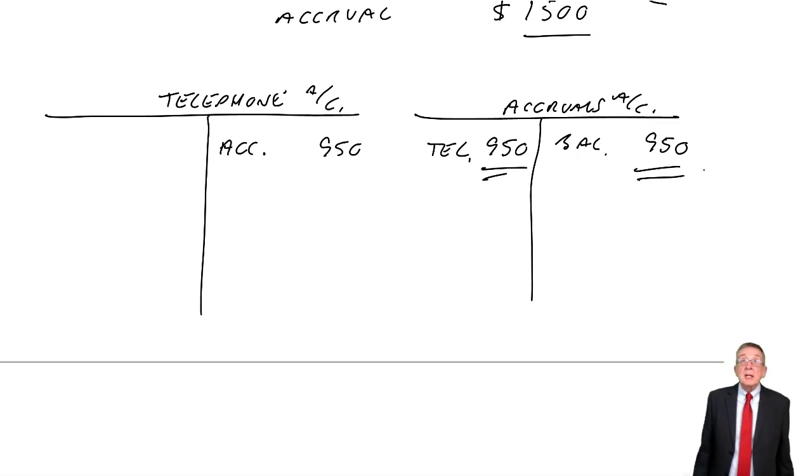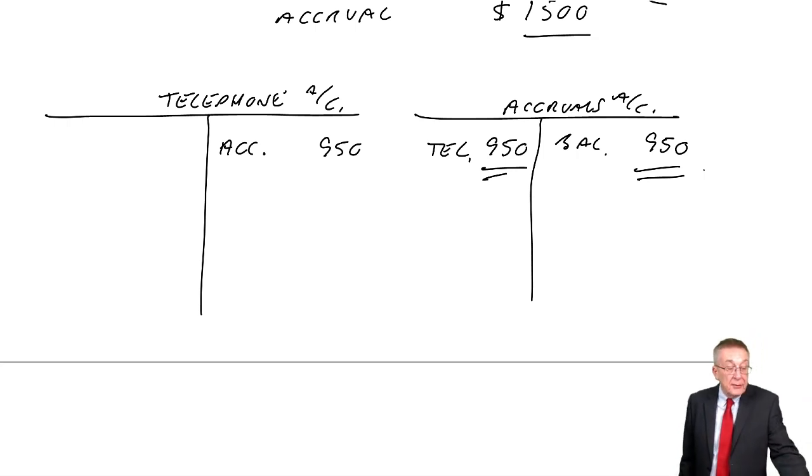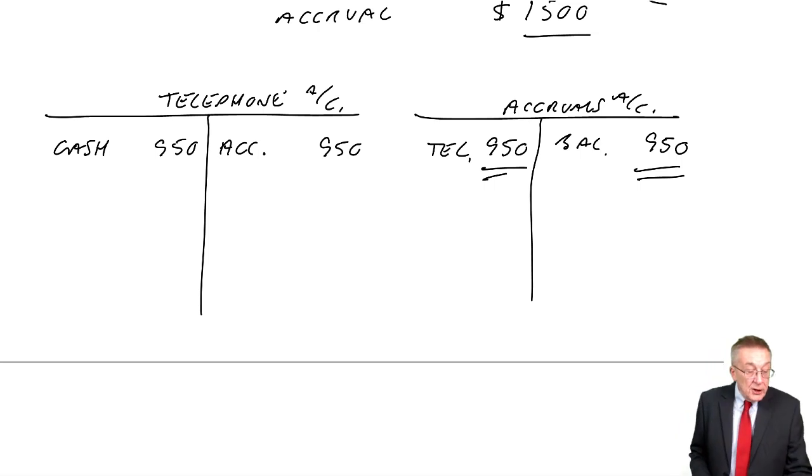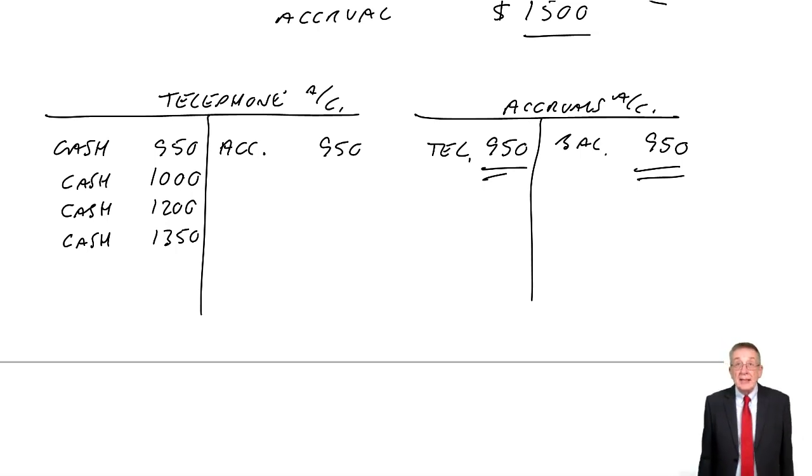The balance on accruals is now zero. The reason is a bit less obvious than it was with prepayments, but it'll become very obvious in a moment. But that's what we do on the first day of the new year. Now we give the books to the bookkeeper, and as always, the bookkeeper, every time there's a payment, enters it. So our year started 1st of April, on the 12th of April we pay £950, credit cash, debit telephone. July we pay £1,000, credit cash, debit telephone. October, £1,200. January, £1,350.